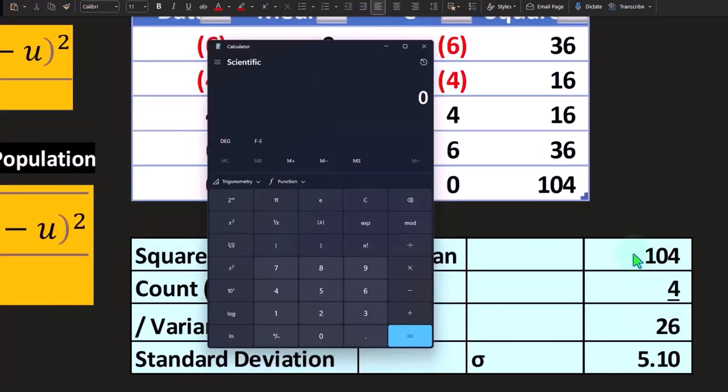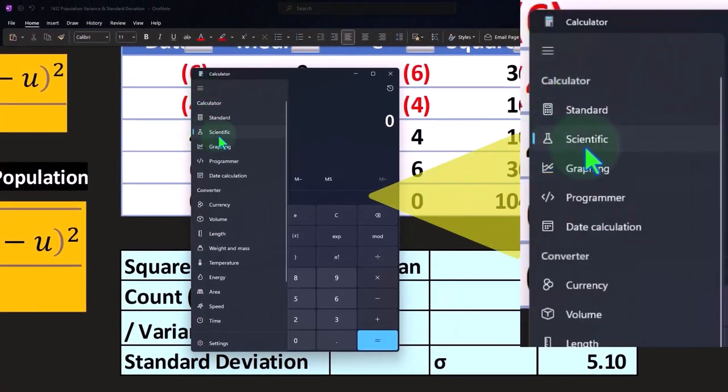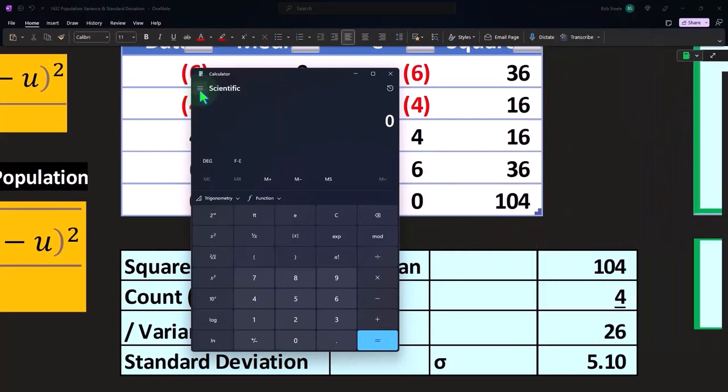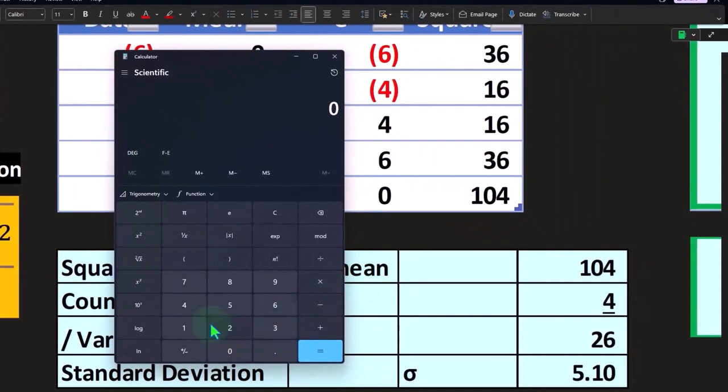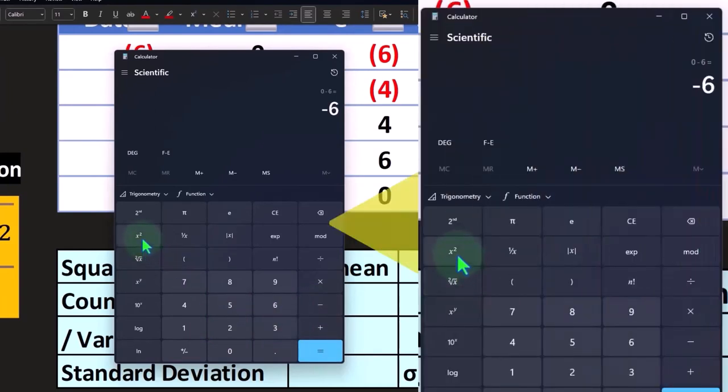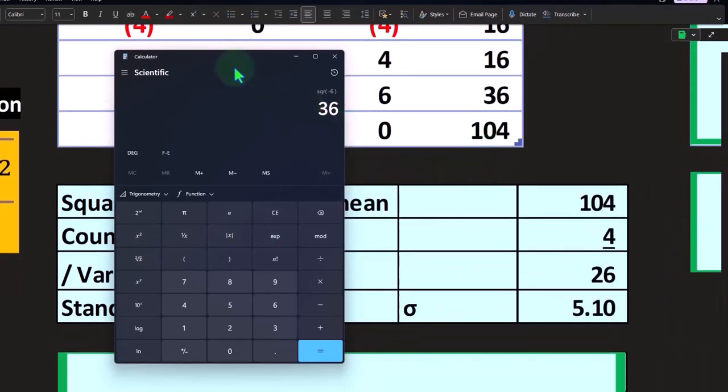If you're doing this on a computer and you pull out your calculator, you can change it to a scientific calculator. For example, if I took this negative six and said negative six, I've got my squared item here, so I could say squared is going to be 36. You can calculate that in your calculator.